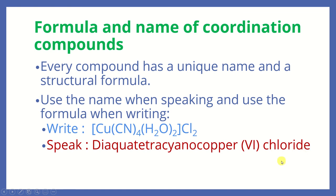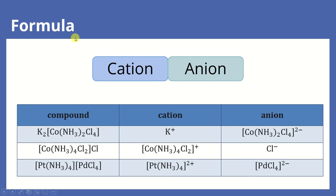In this video, we are going to learn systematically how to show the formula and name of coordination compounds. In the formula, it is a simple ionic connection. We show the cation first followed by the anion. For example, in this compound, anything outside the brackets are counter ions. So the cation comes first here, and after this is the complex. This whole thing will be the anion.